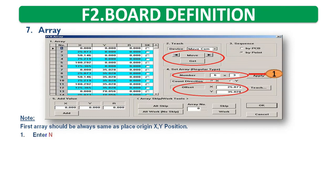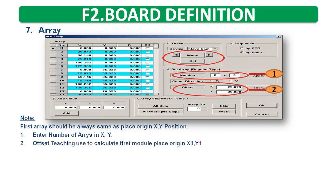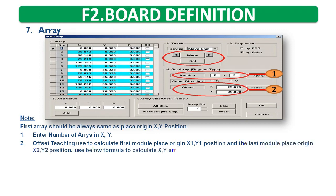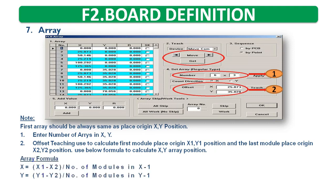First, enter number of arrays in X and Y. Second, offset teaching is used to calculate the first module place origin X1, Y1 position and the last module place origin X2, Y2 position. Use the below formula to calculate X, Y array position — Array formula: X = (X1 minus X2) divided by (number of modules in X minus 1); Y = (Y1 minus Y2) divided by (number of modules in Y minus 1).